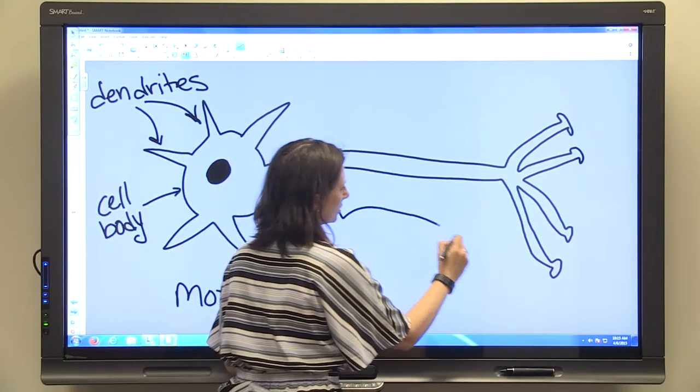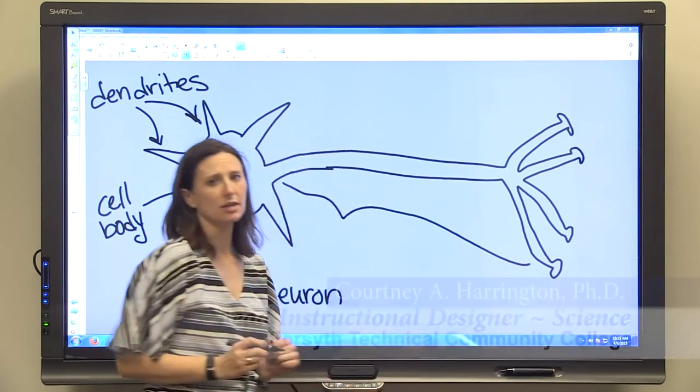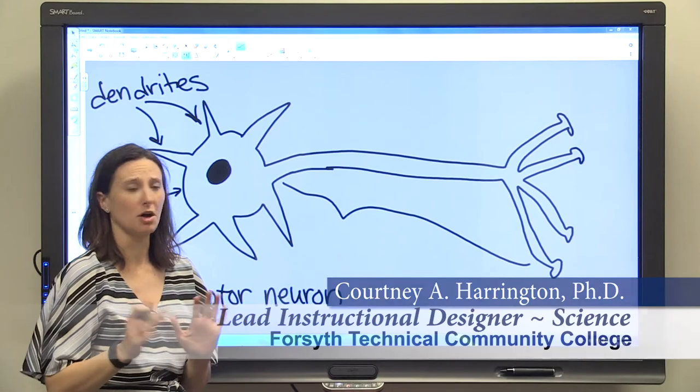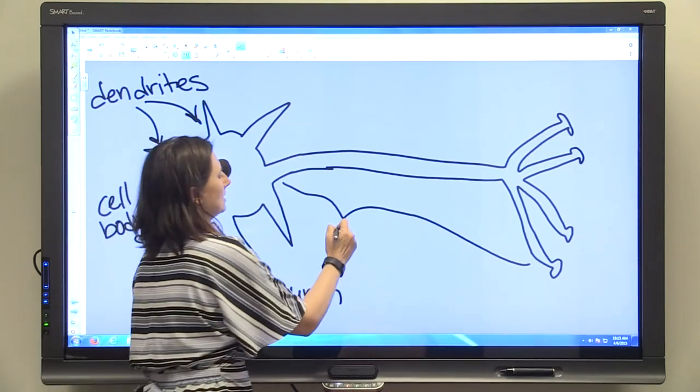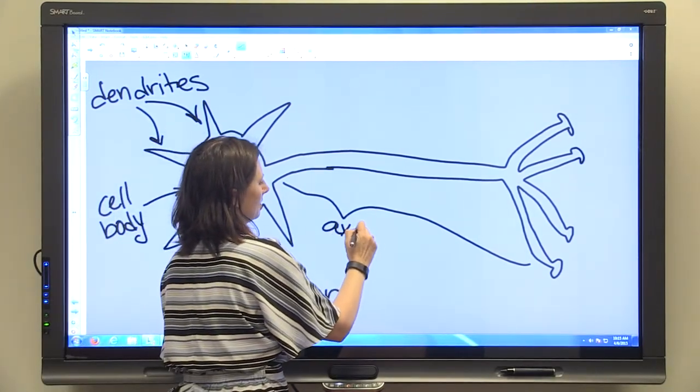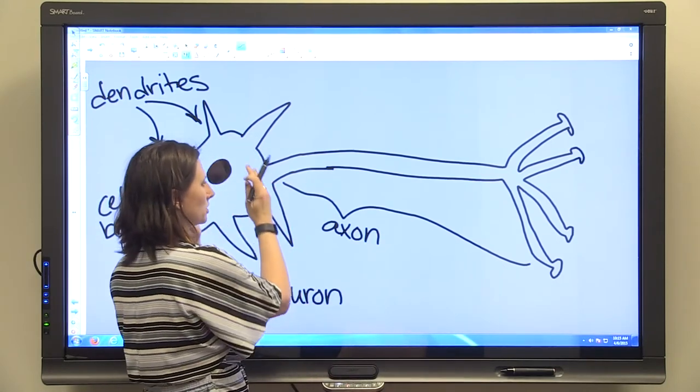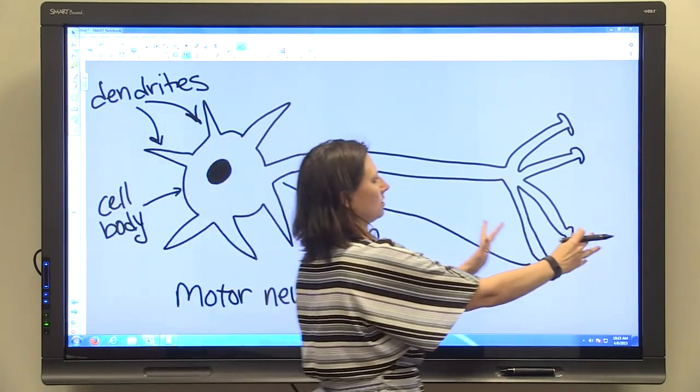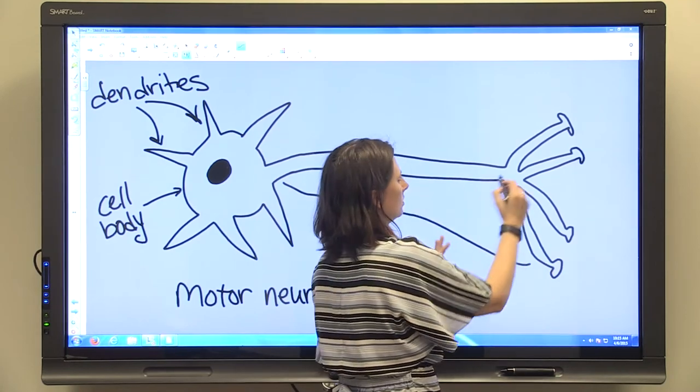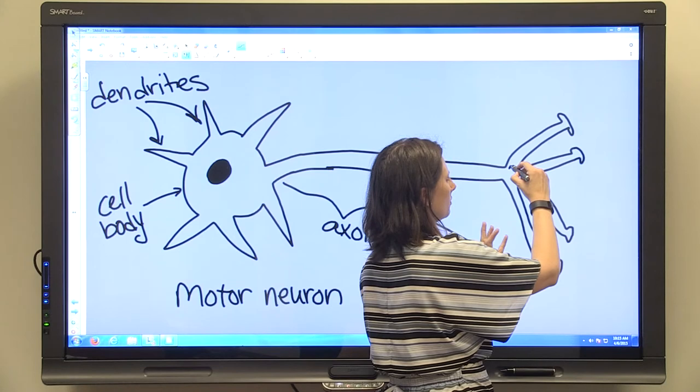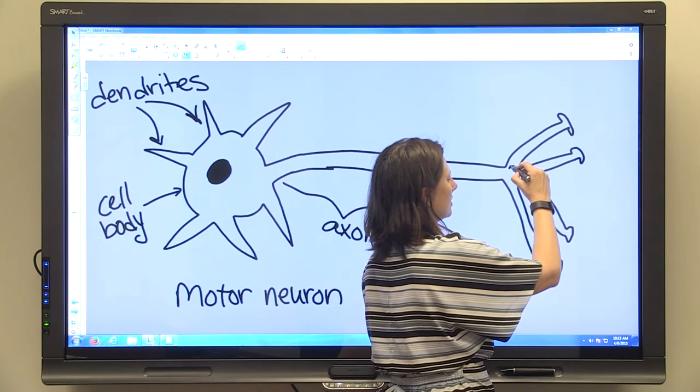This long projection - and it can be very long; some nerves run the length of your legs - from one cell body is an axon. The axon runs from the cell body to where your neuron is going to conduct its impulse.